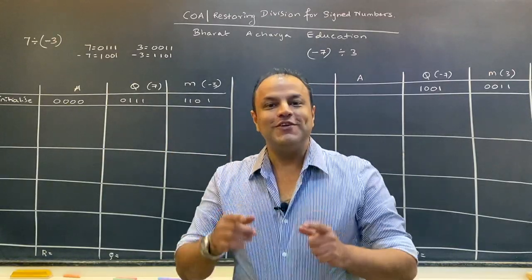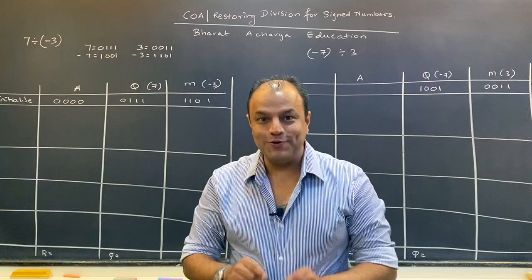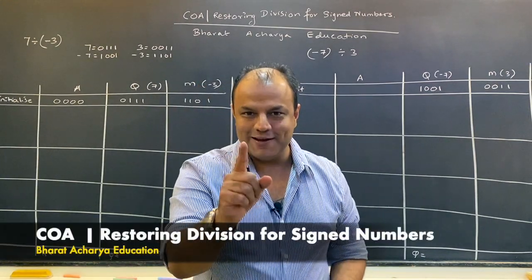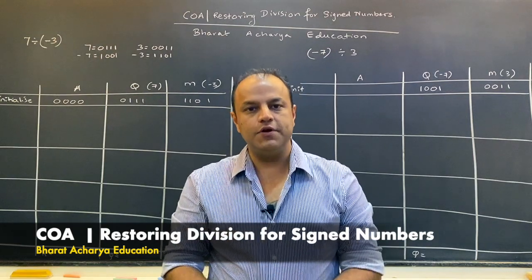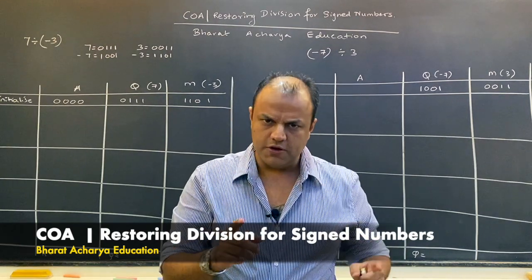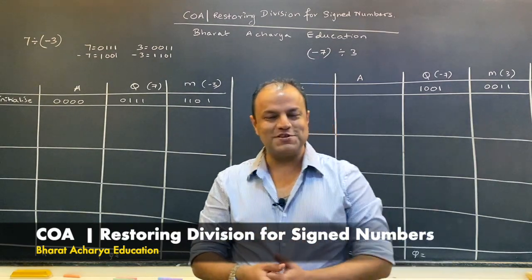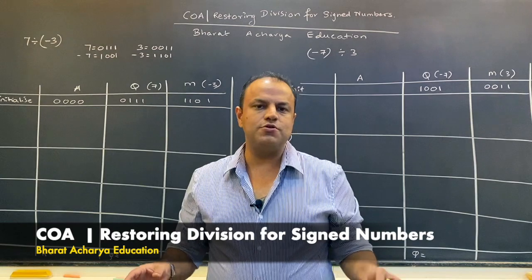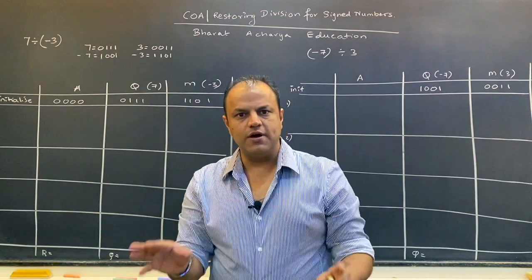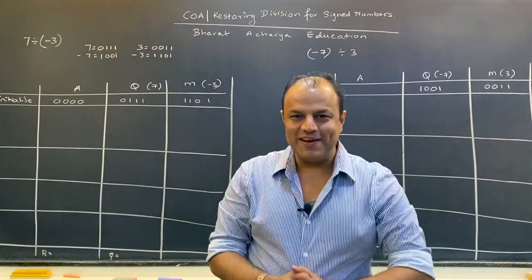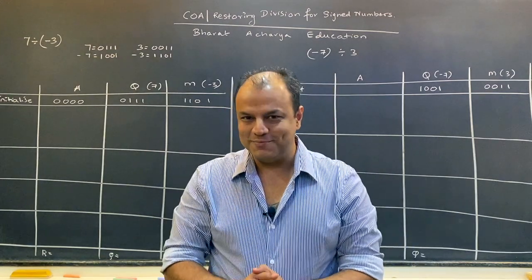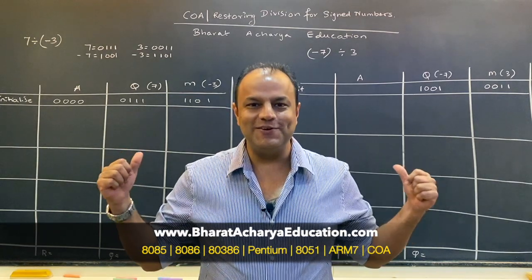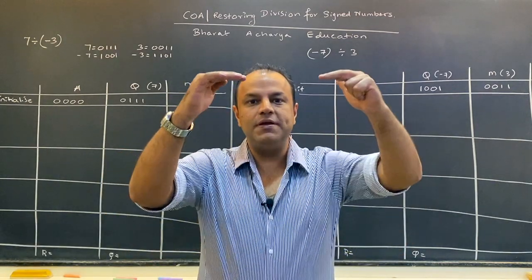Welcome to our new video. Today we are doing this video in the COA subject called restoring division for signed numbers. We've already done a video for division where we saw both restoring division and the faster one — non-restoring division. Those work only for unsigned numbers, so as long as your numbers are positive you use them. If you're preparing for tough college exams or entrance exams like the GATE exam, you need to know this algorithm.